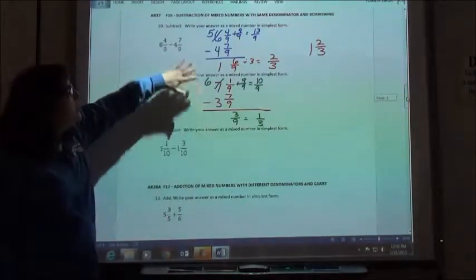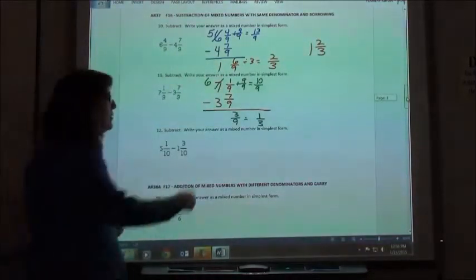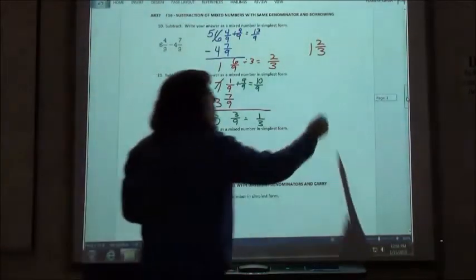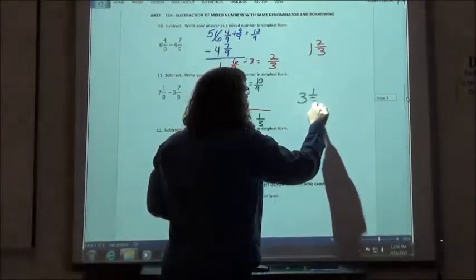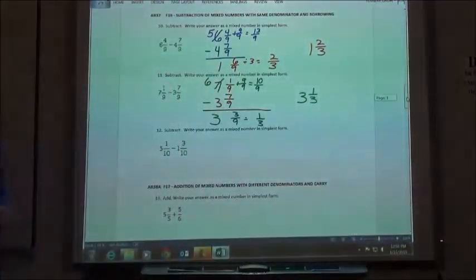Then subtracting the whole numbers, 6 minus 3 is 3. So 3 and 1 third is going to be my answer.